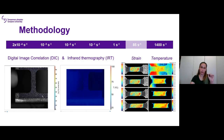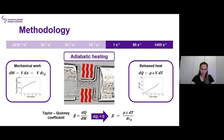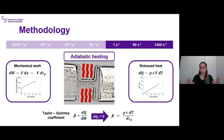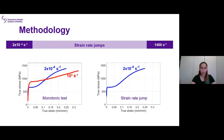Testing at high strain rates may involve a temperature increase due to adiabatic heating — this occurs when the heat generated by plastic deformation cannot dissipate fast enough from the material to the surroundings, resulting in a temperature increase. The fraction of plastic work converted into heat has been defined as the Taylor-Quinney coefficient, and this is related to one of the questions of my PhD thesis.